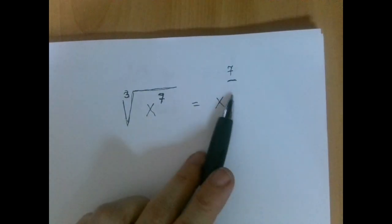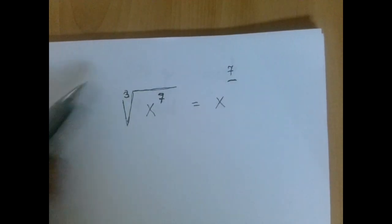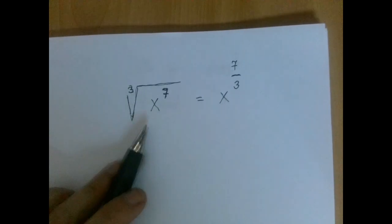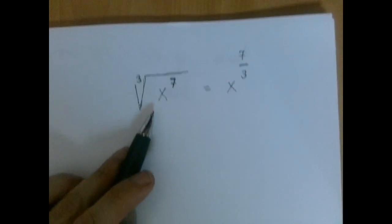And the number in the denominator, or the number downstairs, is how much we go down, that is taking the roots of the number. So x to the 7 over 3 is the same as the third root of x to the 7.